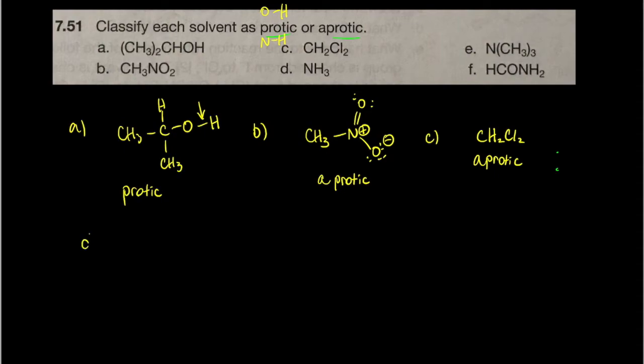Molecule D is ammonia. Well, that has NH bonds, right? So we're going to label that as protic. Ammonia is a protic solvent.